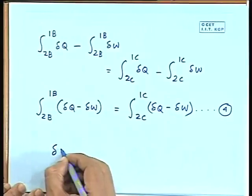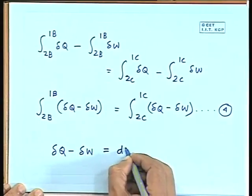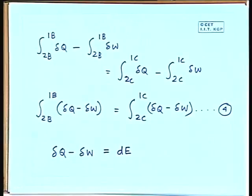But what is this quantity? Heat transfer Q is one form of energy in transit, and work transfer W is another form of energy in transit. So their difference must also be some kind of energy. Let us denote it by capital E. We can then write for any process: dQ - dW = dE, where we use the exact differential symbol for E because it depends only on the end states, not the path.